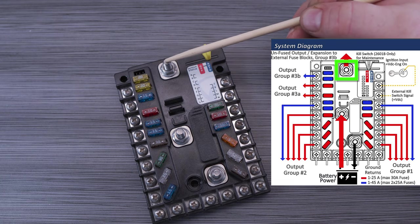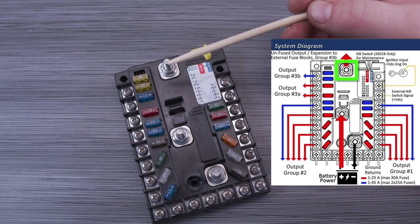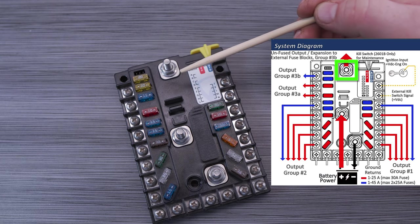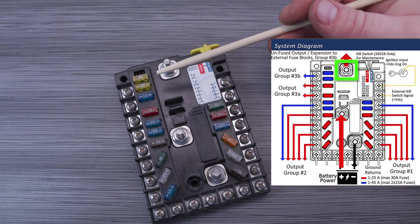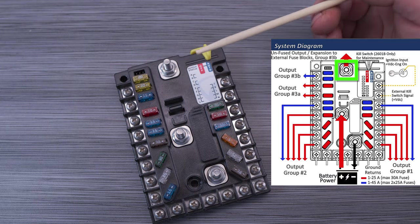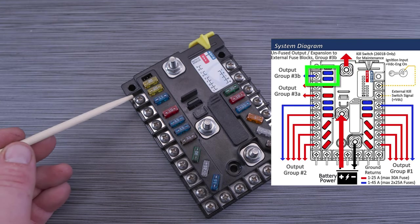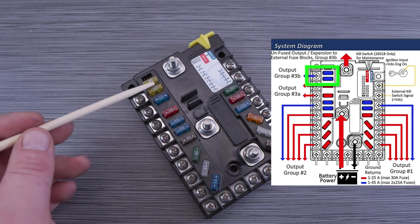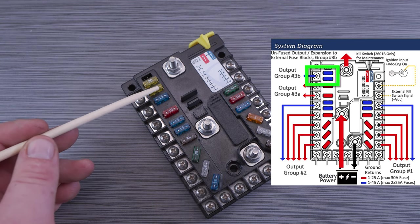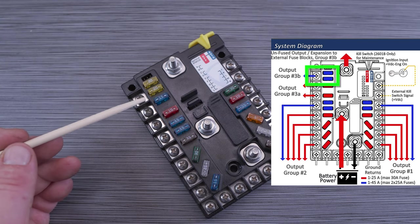Here at the top is terminal A, the unfused positive expansion terminal. This is part of output group 3B which can support a total combined output of 75 amps with terminal A capable of supporting the full 75 amps if required by itself. Going from the top to bottom on the left side we have terminal B, also part of output group 3B. Terminal B is double fuse capable with current capacity of up to a max of 45 amps using two 25 amp fuses or alternatively if you just use one fuse its current capacity is a max of 25 amps.